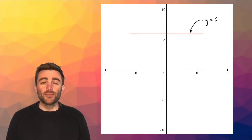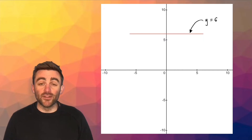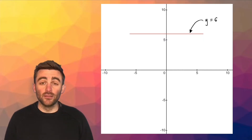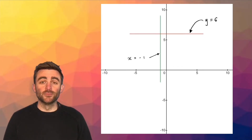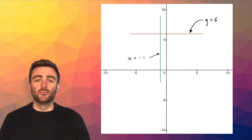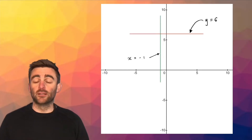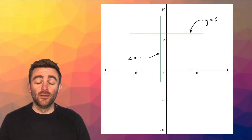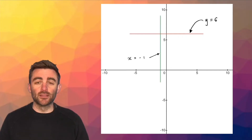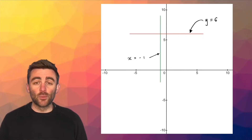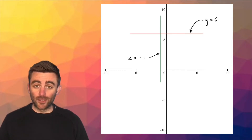Sometimes a straight line has a gradient which is undefined, and that means it's vertical. Those straight lines have an equation of the form x equals a number, such as x equals negative 1. Horizontal and vertical lines are not conceptually difficult on their own, but we must be careful when looking at medians, altitudes, and perpendicular bisectors, as horizontal and vertical lines can crop up.